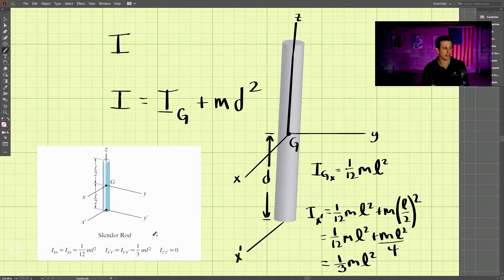Now if we look at the data sheet, what did we get? This value right here, 1/3 ml squared. So that is the value if we were rotating about this x-prime axis. You need to make sure that you keep track of what axis you're rotating about, and use the parallel axis theorem to shift that rotational axis depending on the point you're rotating about.